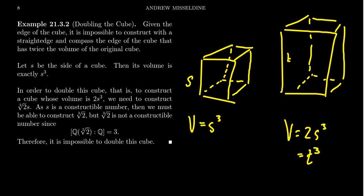We can solve for T here very quickly and get the cube root of 2s³, which simplifies to be cube root of 2 times s.